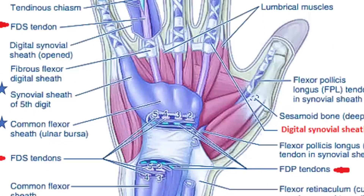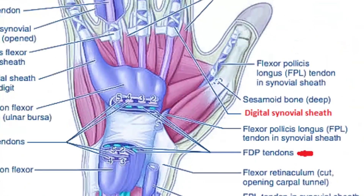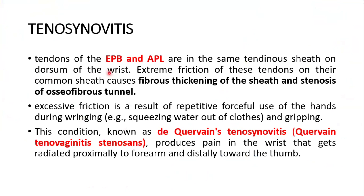This is the pronator quadratus muscle and these are the tendons passing over it. The space between them is called the space of Parona. The flexor pollicis longus is continuous, and infection can spread into the radial bursa. Tendons of the extensor pollicis brevis and abductor pollicis longus are in the same tendinous sheath on the dorsum of the wrist. Extreme friction of these tendons on their common sheath causes fibrous thickening of the sheath and stenosis of the osteofibrous tunnel.